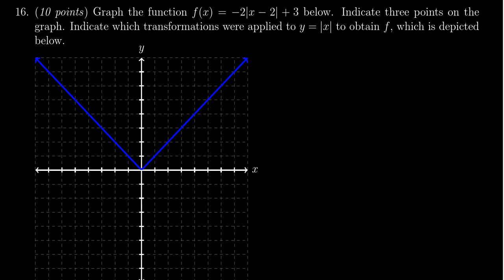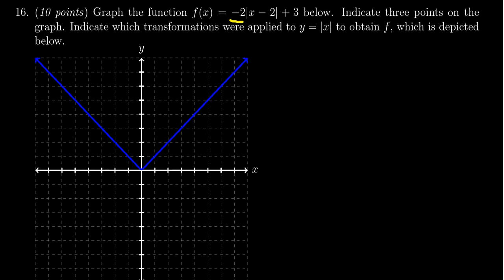First of all, we need to indicate all of the transformations that were applied to y equals the absolute value of x, the standard absolute value, to get us to where we are here. What are the transformations going on? Notice we have this coefficient of negative two in front of the absolute value. The fact that it's negative means the absolute value is reflected across the x-axis. The fact we have a two there means it was vertically stretched by a factor of two.